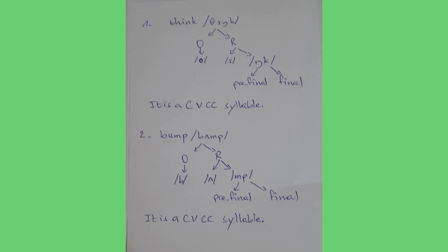Another example: 'bamp'. In 'bamp', we have the onset /b/, and the rhyme includes the nucleus — the vowel sound /a/ — and two consonants in the coda: /m/ is pre-final and /p/ is final. So it is a CVCC syllable.